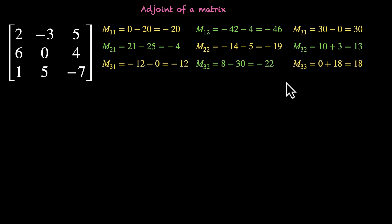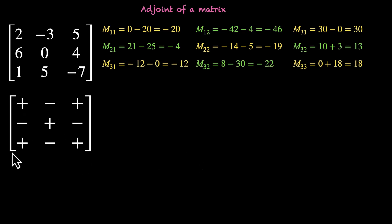If you want to double check, you can pause the video and find these values for yourself. Now, once we have the minors, we can get to cofactors by multiplying them with signs — either plus 1 or minus 1, depending on which element they correspond to. Top left starts with plus, and then we alternate.